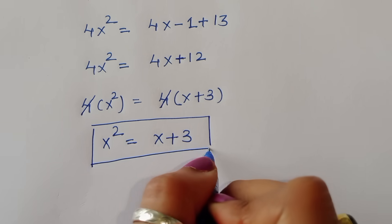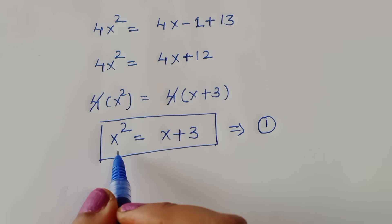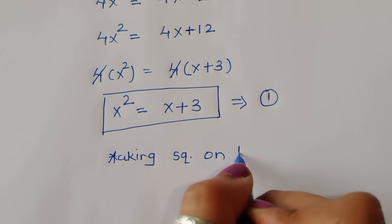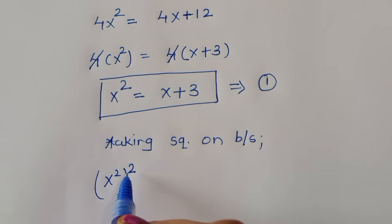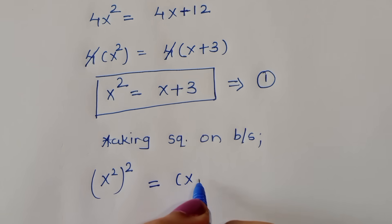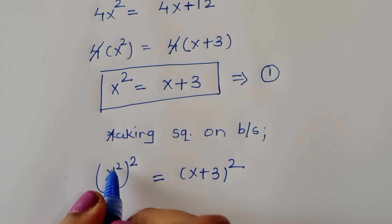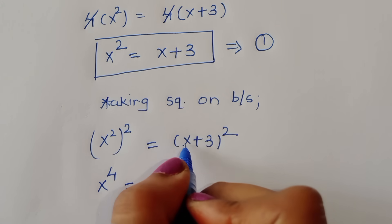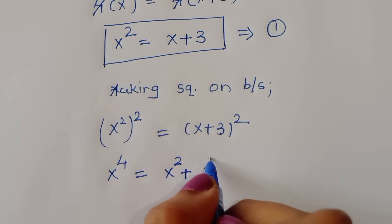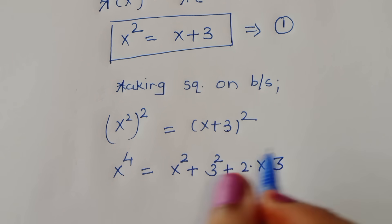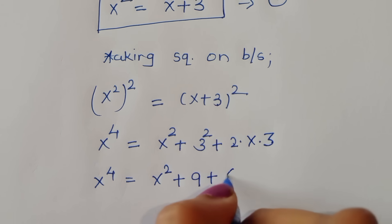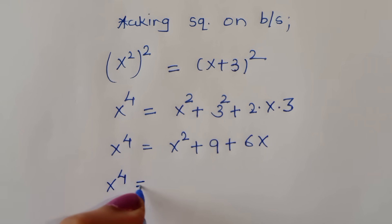To find x^4, we square both sides of equation 1: (x²)² = (x + 3)², giving x^4 = x² + 6x + 9. We need to find x^7, so we keep building up the powers. Substituting equation 1 (x² = x + 3) into the right side.